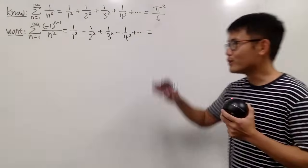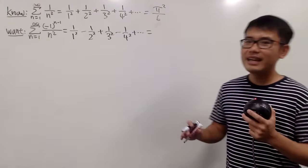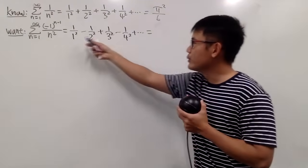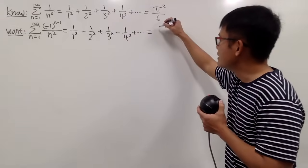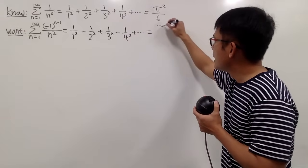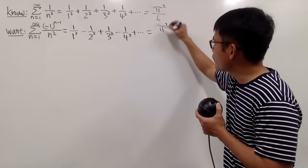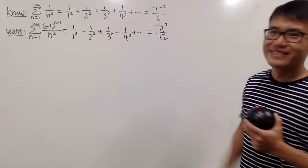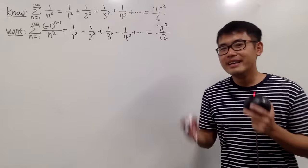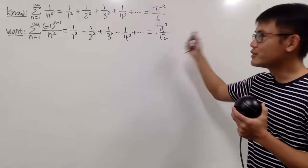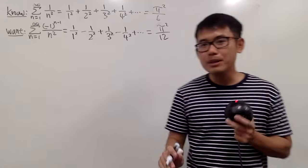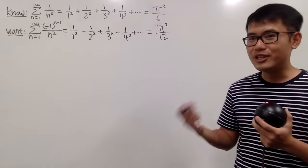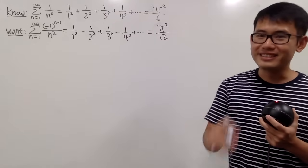Hopefully you guys all tried this. Let me tell you that the answer to this right here is equal to pi squared over 12. And if you got this right, you can comment down below and let us know — especially you can share your solutions with us.